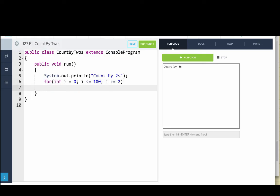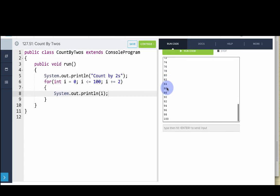Remember plus equals is a shortcut for saying i equals i plus two. Then we'll say system dot out dot println i. So let's run this. And we'll see what happens: we go zero, two, four, six, eight, all the way up to 100.